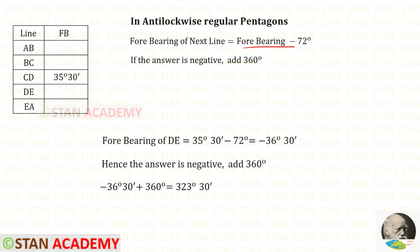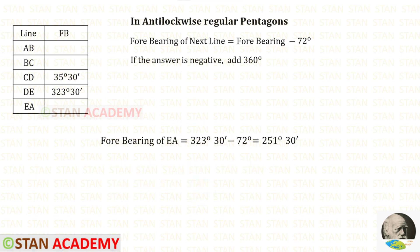Now using this formula, we can find the forebearing of DE. 35 degrees 30 minutes minus 72 degrees gives us minus 36 degrees 30 minutes. Since we got a negative answer, we add 360 degrees, and we will get 323 degrees 30 minutes.